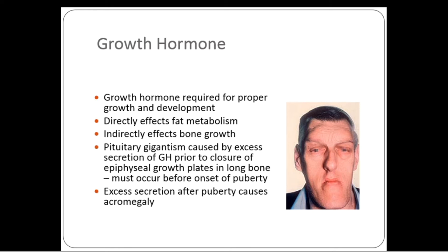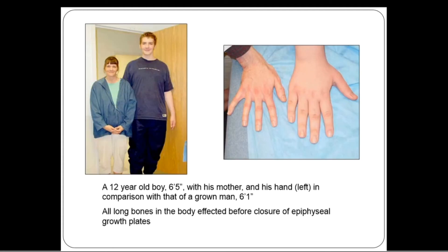Pituitary gigantism is caused by excess secretion of growth hormone prior to the closure of epiphyseal growth plates in the long bones, and must occur before the onset of puberty. If it occurs after that, we get acromegaly, where only tissues increase in size — as seen in this picture where the jaw is quite large. This is a picture of a 12-year-old boy at six feet five inches shown beside his mother, and his hand compared to that of a grown man at six feet.